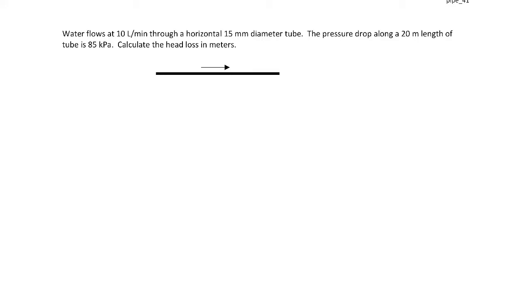In this example, we have water flowing at 10 liters per minute through a horizontal 15 millimeter diameter tube. The pressure drop along a 20 meter length of this tube is 85 kilopascals. We're asked to find the head loss over this distance in meters.